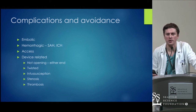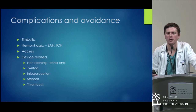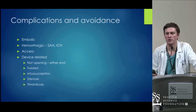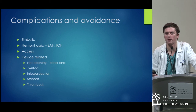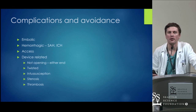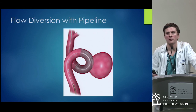For embolic complications: watch with aspirin and Plavix, make sure they're therapeutic, ensure good heparinization during the procedure. To avoid hemorrhagic complications — subarachnoid or intracerebral hemorrhage — make sure you're not too therapeutic on aspirin and Plavix, and be careful with blood pressure: keep systolics less than 140. For access complications, make sure groin sticks are low — patients are on aspirin and Plavix, which is really important. Device-related complications include the device not opening, twisting, intussusception, stenosis, and thrombosis.